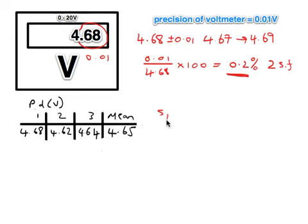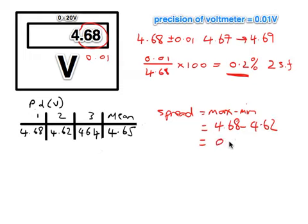Now, what do I mean by the spread? Well, the spread of these results is the maximum value take away the minimum value. So in this case, that would be, the maximum is 4.68, the minimum is 4.62. So the spread of those results is actually 0.06 volts. Half of that spread would obviously be half of 0.06, which is 0.03 volts, and it's half the spread that we use for our uncertainty.